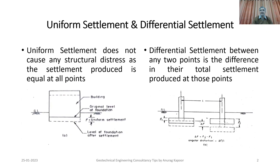Now coming to the next slide on uniform settlement and differential settlement. Uniform settlement does not cause any structural distress as the settlement produced is equal at all points. In the figure, the ground level is marked as GL. A building is shown with the original level of foundation at a certain depth below the natural ground level, and the dashed lines show the uniform settlement occurring in this building.